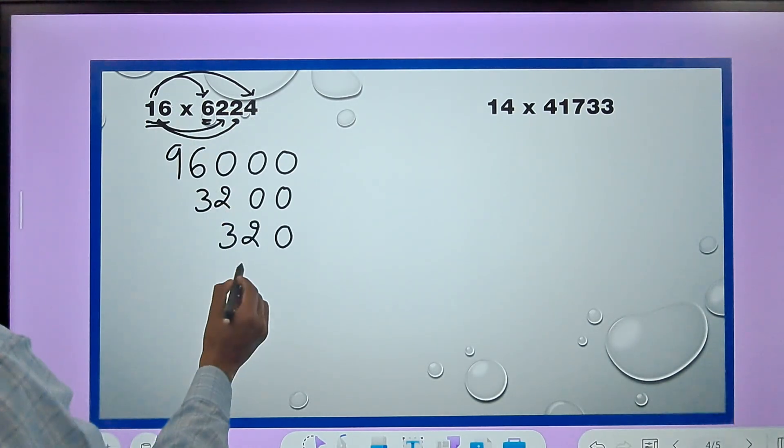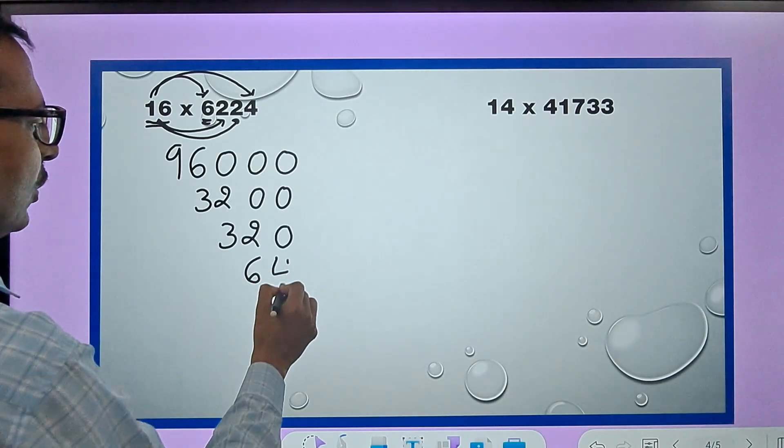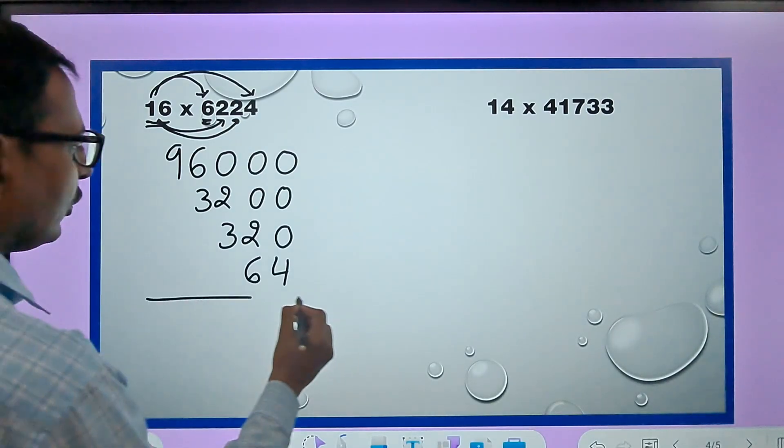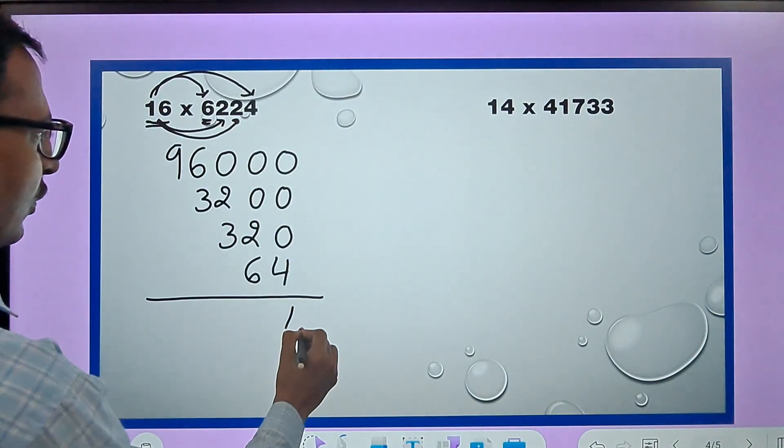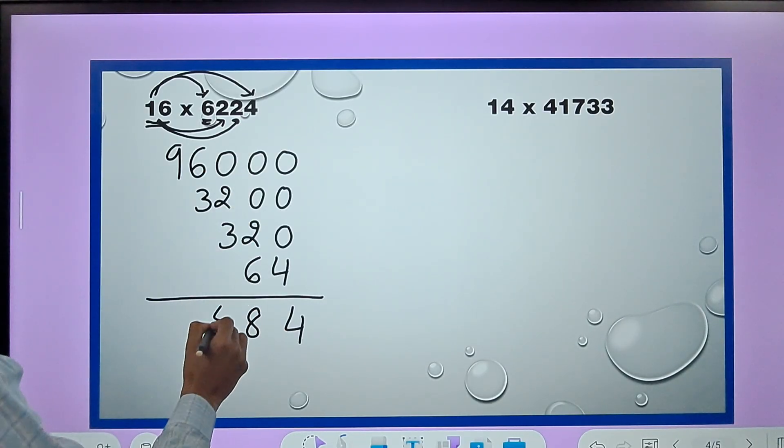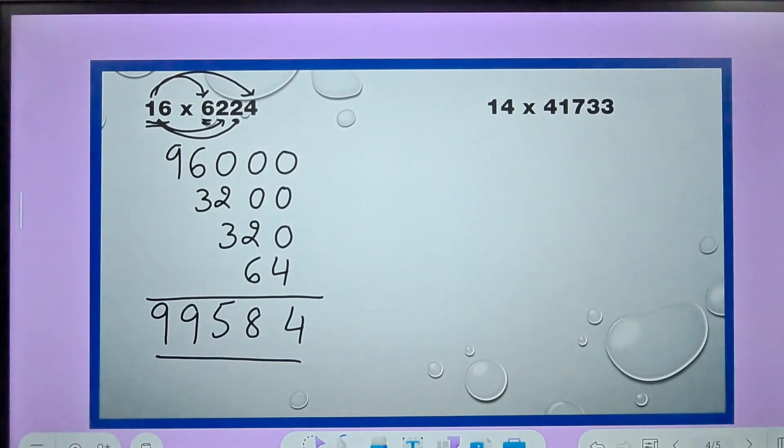Likewise, 16 times 2 again is 32 but 1 zero, so 1 zero and a 32. And finally, 16 times 4 is 64 which I have to write without any zeros because that is the unit digit. And now I have my 4 numbers. So this is 4, this is 4, this is 8, and then this is 5, and then this is 9 and this is 9. So 99584 is the answer for this particular question.